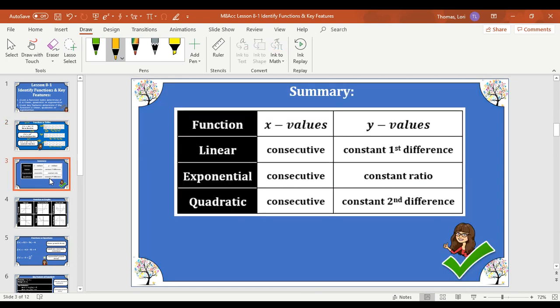So in summary, when we have a linear function and our x values are consecutive, it will have a constant first difference, which is our m value, our slope. When we have a function that's exponential and our x values are consecutive, our outputs, if they have a constant ratio, a multiplier, we know it's exponential and that gives us our b value. Quadratic, our x values, if they're in sequential order and they're consecutive, if it has a second difference, we're going to take that second difference and we're going to divide it by 2 and that gives us the a value.